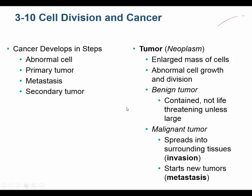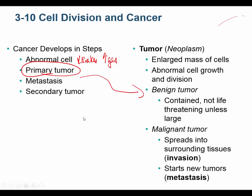Cancer develops in steps. First, you have an abnormal cell with no brakes and a lot of gas activity. You get a primary tumor. Primary tumors could be self-contained and encapsulated, or they may not have the blood flow to maintain growth because they lack nutrients and oxygen. In that case, these primary tumors could stay benign.